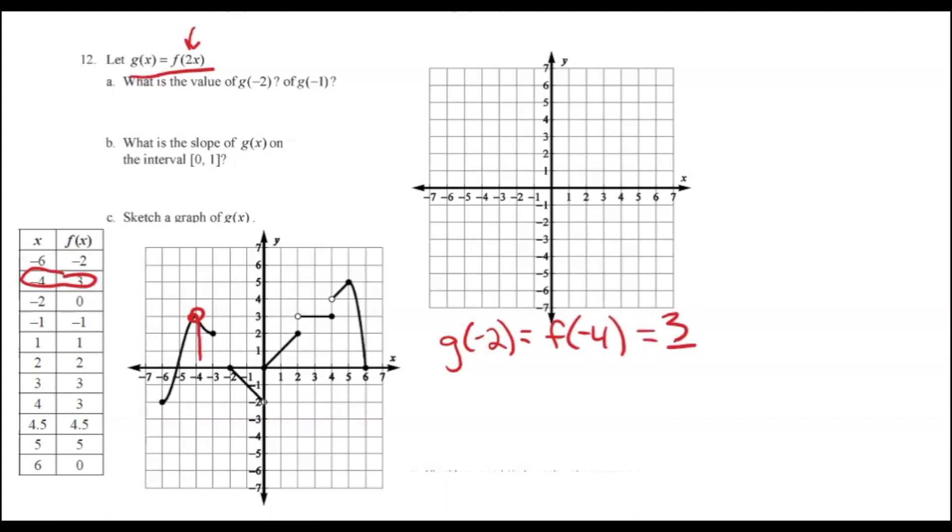Then it asks for G of negative 1. Well, G of negative 1, if I multiply the negative 1 by 2 like the equation suggests, that will be F of negative 2, and F of negative 2, again, you can look at the graph at negative 2, it's 0, and the table also includes this point, it's 0. So that means now we have those two points for G.